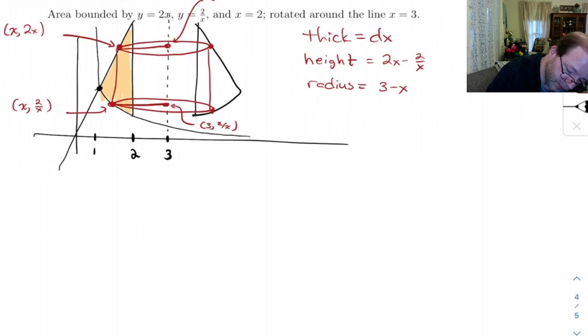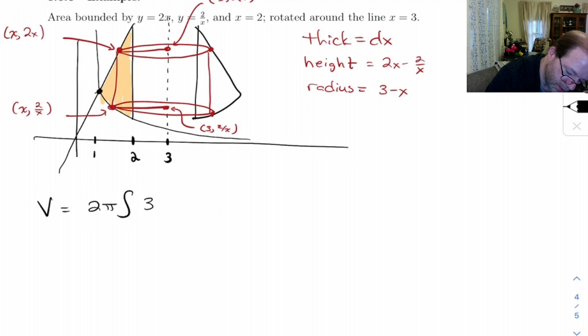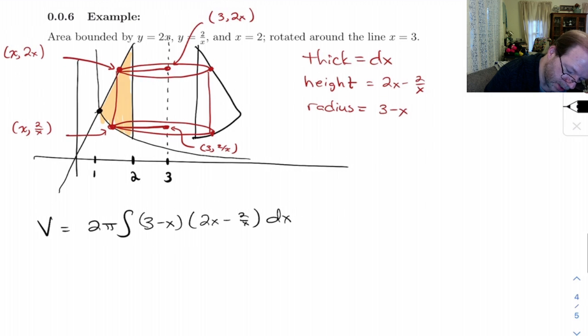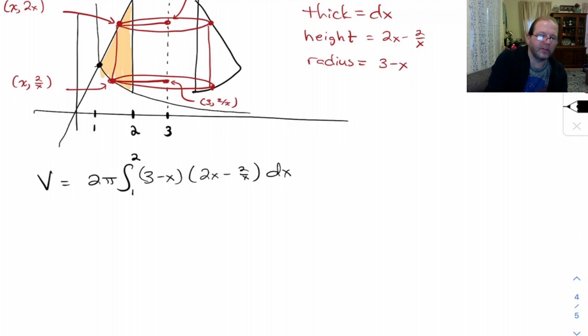Alright, so the volume of this thing is going to be 2 pi integral, radius 3 minus x, height 2x minus 2 over x, thickness dx. And let's see, our x-coordinates on the original bit go from x equals 1 to x equals 2. So let's work this out.